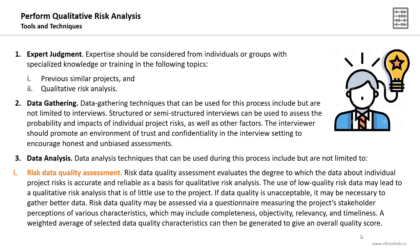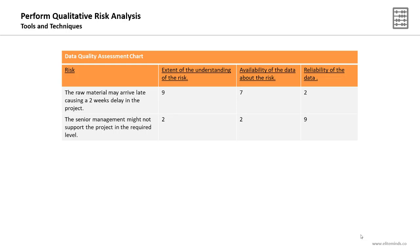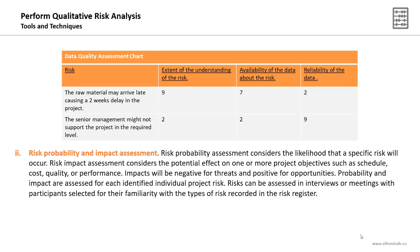Risk data quality may be assessed via a questionnaire measuring stakeholders' perceptions of various characteristics, which may include completeness, objectivity, relevancy, and timeliness. A weighted average of selected data quality characteristics can be generated to give an overall quality score. It is important to use the risk data quality assessment technique to assess the quality of information before starting qualitative risk analysis. Here is an example of the data quality assessment chart for two risks — the first being that raw material may arrive late, causing a two-week delay. You will measure the extent of understanding of the risk, the availability of data, and the reliability of the data.